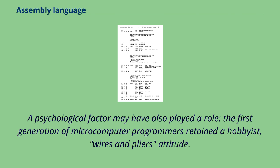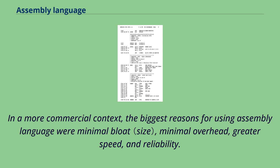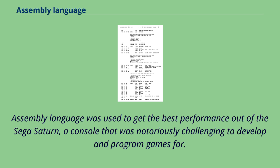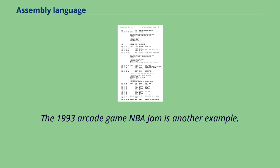In a more commercial context, the biggest reasons for using assembly language were minimal bloat, minimal overhead, greater speed, and reliability. Typical examples of large assembly language programs from this time are IBM PC-DOS operating systems, the Turbo Pascal compiler, and early applications such as the spreadsheet program Lotus 1-2-3. Assembly language was used to get the best performance out of the Sega Saturn, a console that was notoriously challenging to develop and program games for. The 1993 arcade game NBA Jam is another example.